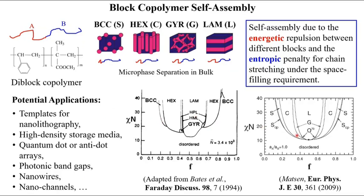We see that while the theory gives good qualitative description of the experimental results, due to its mean field approximation, as well as the differences between the experimental and model systems, there are discrepancies between these two phase diagrams, particularly near the order-disorder transition, where the fluctuations important in the experimental system are neglected by the theory. Such fluctuations can be and have been studied by molecular simulations.